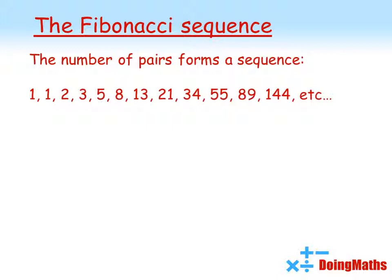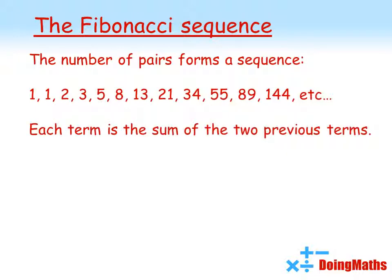If you look closely at this sequence you can see how it is made up. Each term is the sum of the two previous terms — for example, one add one gives two, one add two gives three, two add three equals five, and so on. Mathematically we can state it as: F₀ equals F₁ equals one — those are the first two numbers — and from then on, Fₙ equals Fₙ₋₂ plus Fₙ₋₁. This is the Fibonacci sequence.